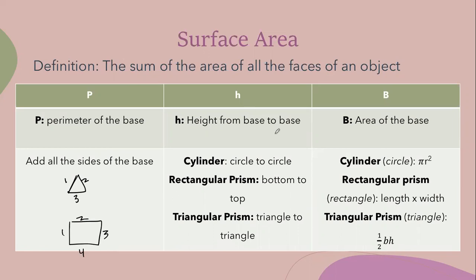H stands for height from base to base. So on a cylinder that's from circle to circle. If you're facing that way it's from here to here. If it's standing upright that's just from there to there. On a rectangular prism it's always bottom to top. From bottom to top there's your height. Now for a triangular prism it's always from triangle to triangle.